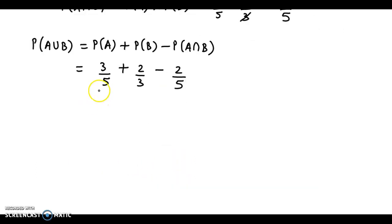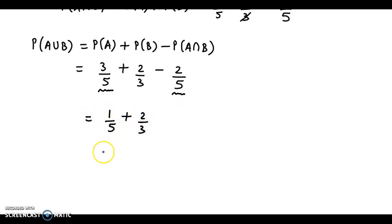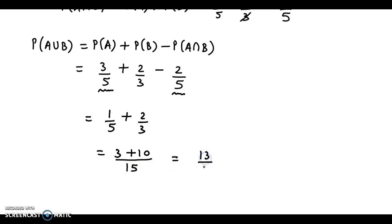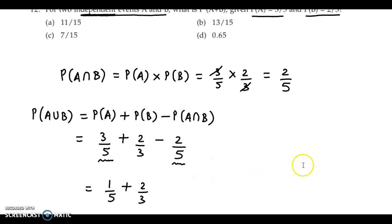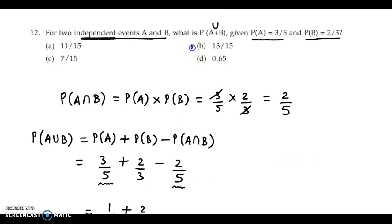Bhi simplify karte hain. Agar in do terms ko hum dekhein: 3/5 minus 2/5 toh yeh ho jata hai 1/5 plus 2/3. Ab equalize karte hain, toh yeh aa jayega 3 plus 10 upon 15, so final answer aata hai 13 upon 15. Option check kar lete hain — 13 by 15 — toh iska sahi answer hai Option B: 13/15.